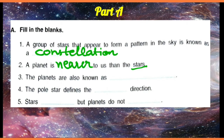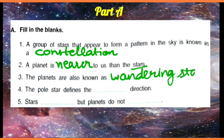Number 3: the planets are also known as — what were planets called? The wandering stars.